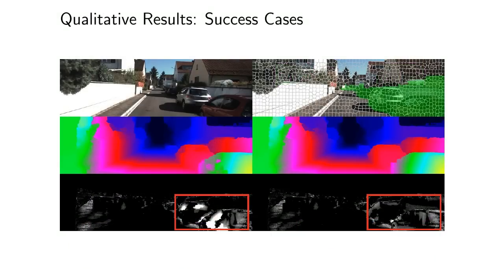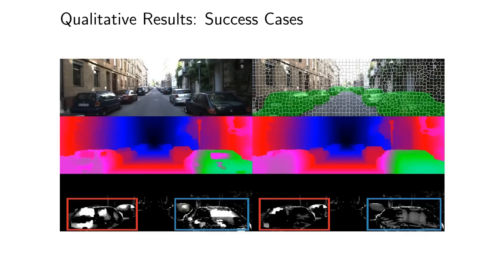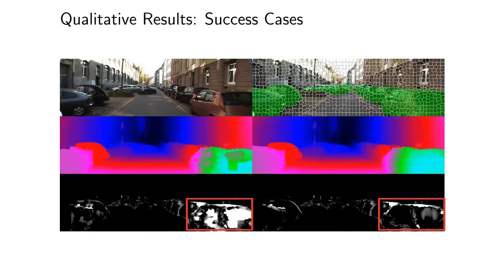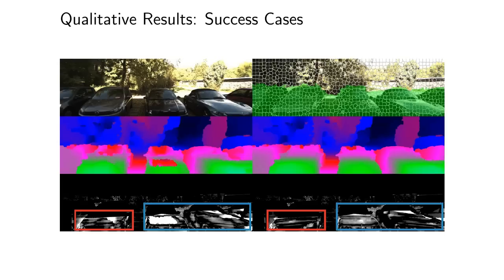Here, we show some results of our method. We compare the results of our model without Displets on the left side to our full model on the right side. Note how our approach is able to reduce errors in reflective and textureless regions. This is a particularly difficult example where photoconsistency is strongly violated. Yet, our model is able to recover the correct geometry to a large extent.